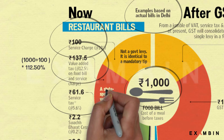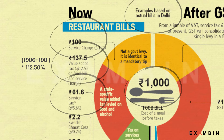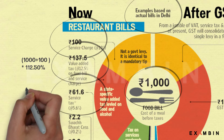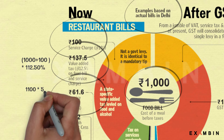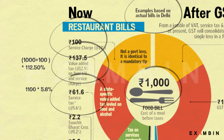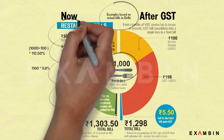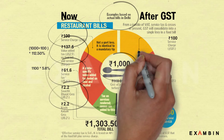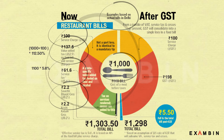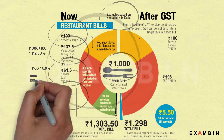Then service tax of 5.6% — that is 40% of the food bill — is taxed, giving 61.6 rupees. Two cesses, Swachh Bharat Cess and Krishi Kalyan Cess, both at 0.2%, add 2.2 plus 2.2 rupees. Summing up: 1000 + 100 + 137.5 + 61.6 + 2.2 + 2.2 gives a total bill of 1303.5 rupees.